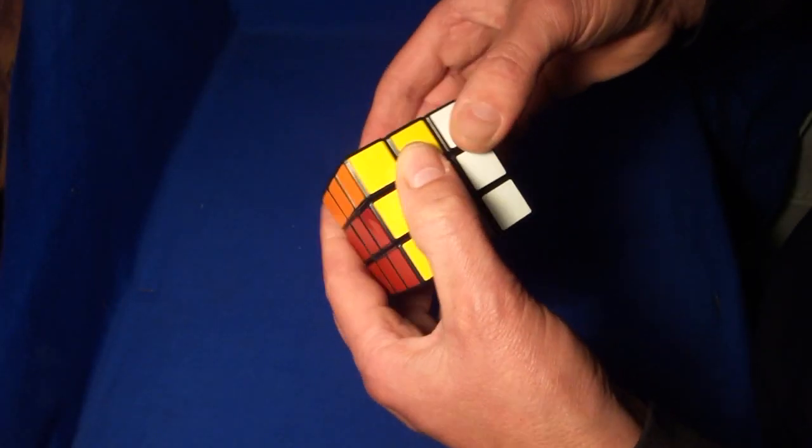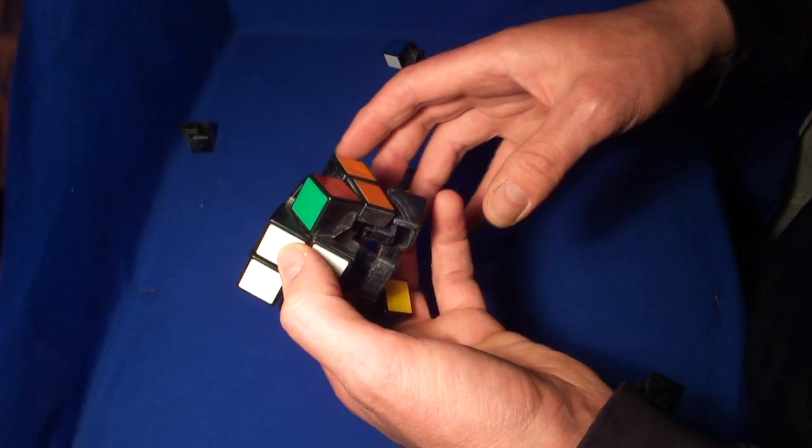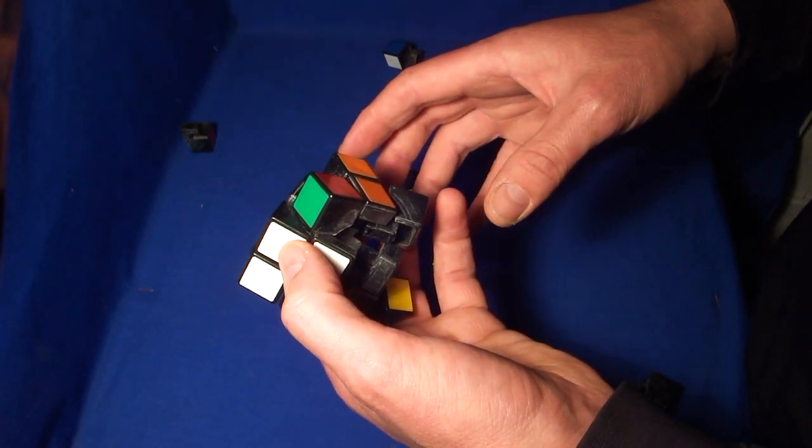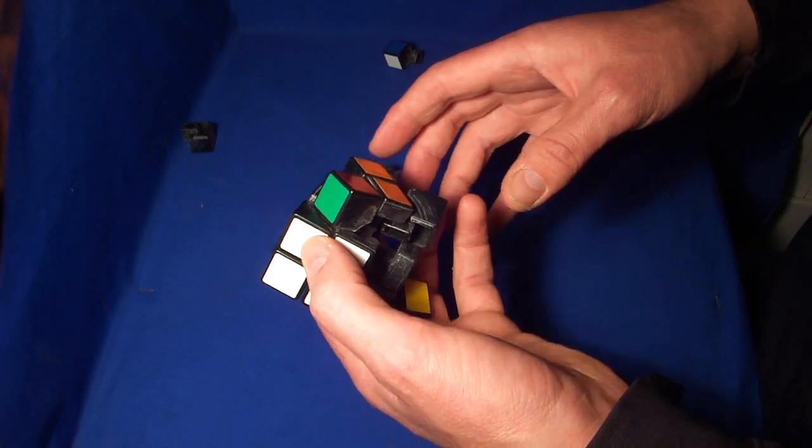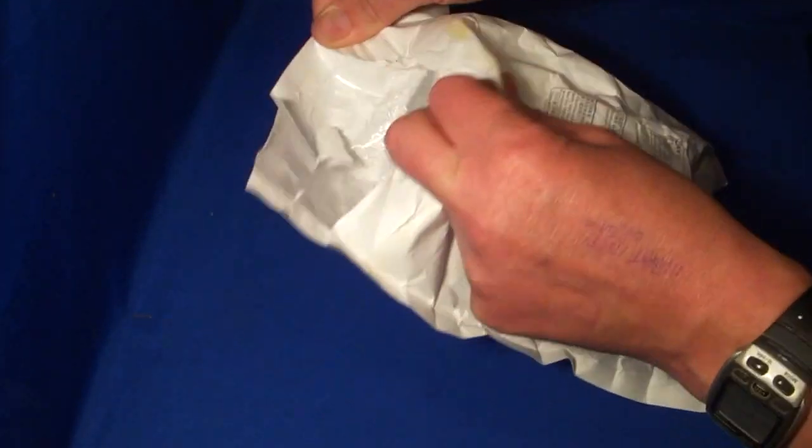Hello, I recently bought a Dayan 5 Zanchi Cube, and this isn't it. It's actually one of my original Rubik's Cubes from the 80s. I really like it, but as you can see it does come apart sometimes, so I thought I'd try something different.